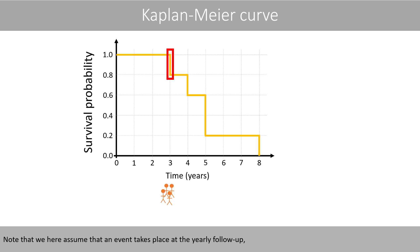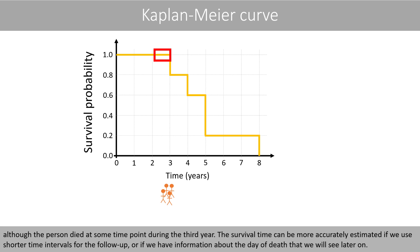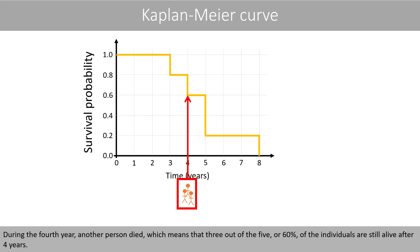Note that we here assume that an event takes place at the yearly follow-up, although the person died at some time point during the third year. The survival time can be more accurately estimated if we use shorter time intervals for the follow-up, or if we have information about the day of death, which we will see later on.